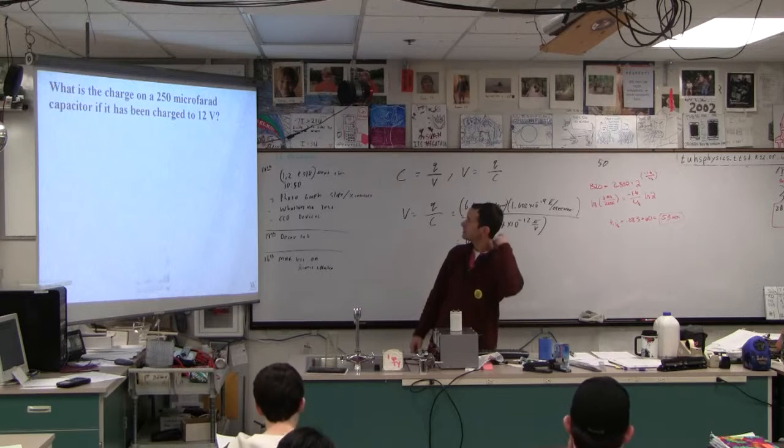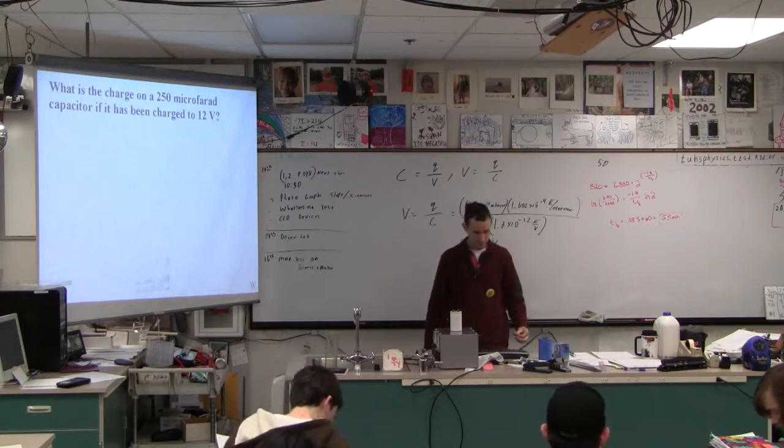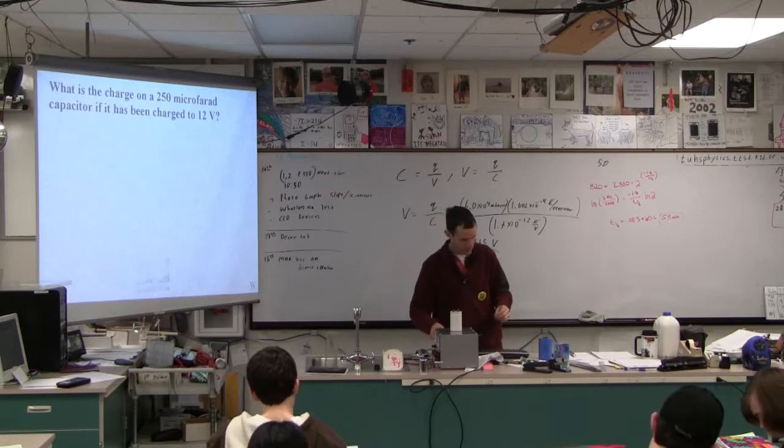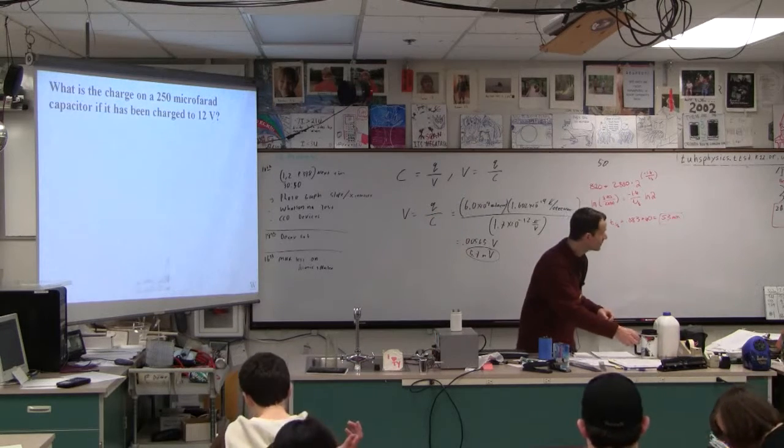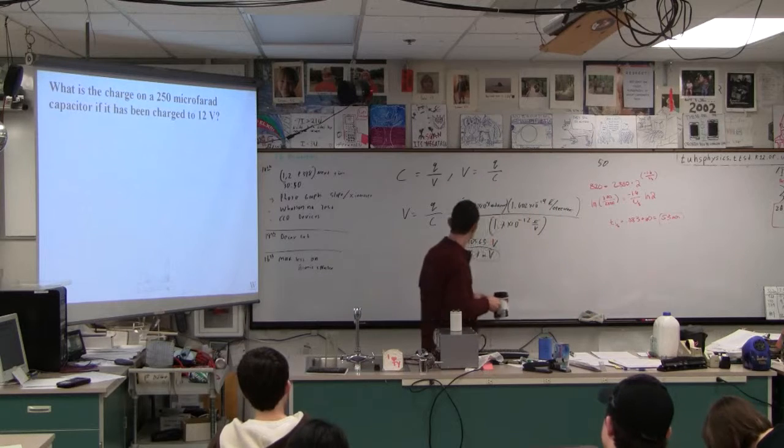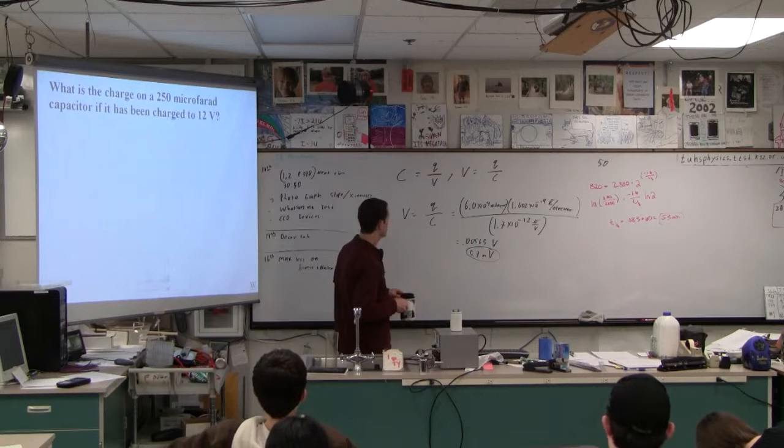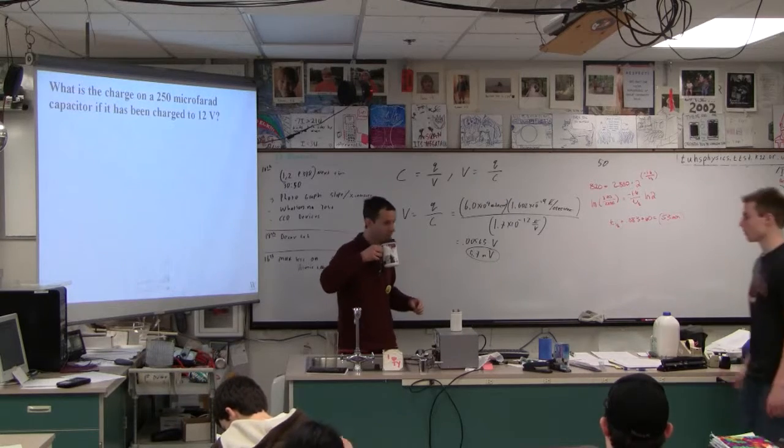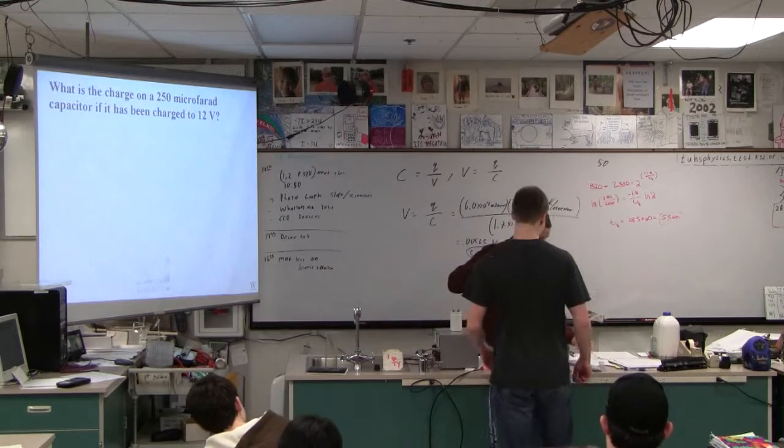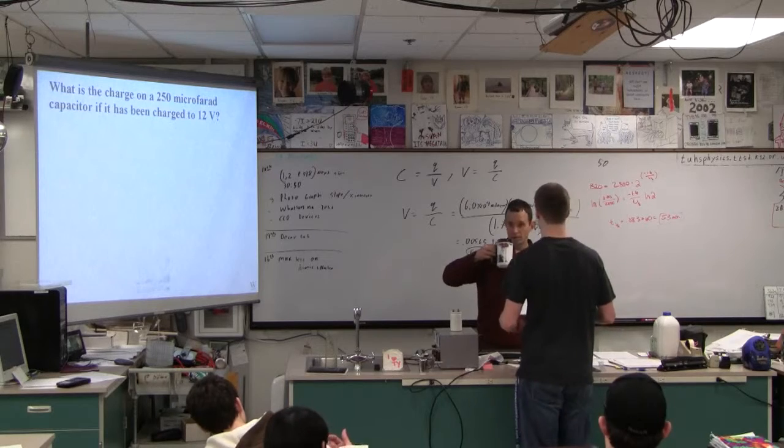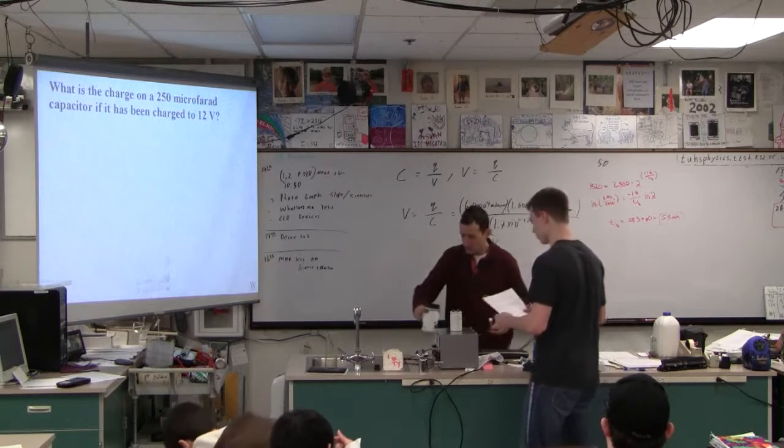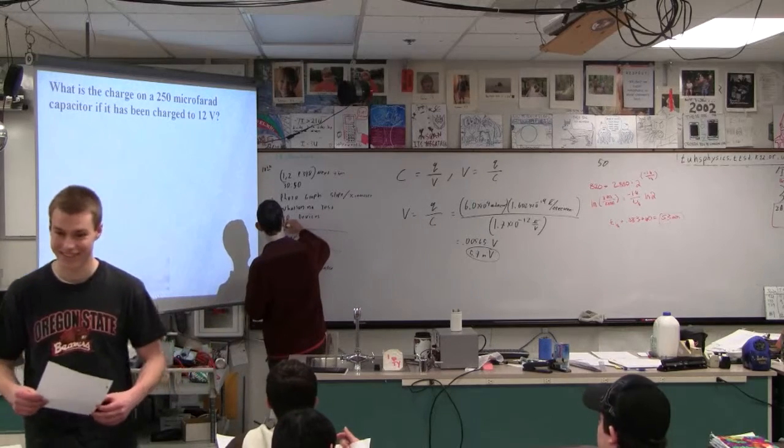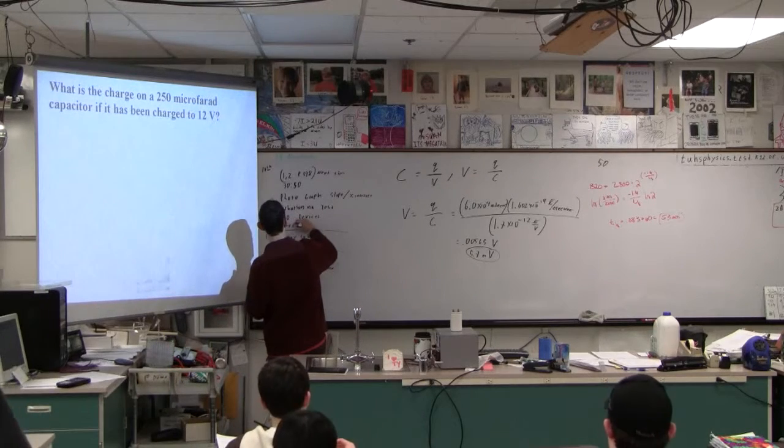Can we try some of these? Why is it C over V and not... Oh, it's coulombs per volt. Here's a little note on micro. That's right. Micro is 10 to the minus six.